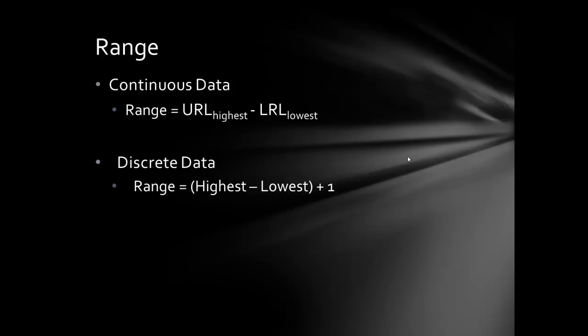Remember, the upper real limit is halfway above the value and the lower real limit is halfway below. For discrete data, the range is calculated somewhat differently: you take the highest score minus the lowest score, then add one to that answer. The reason you don't use real limits for discrete data is because each number is a whole number — there's no measure in between each number on the response scale.